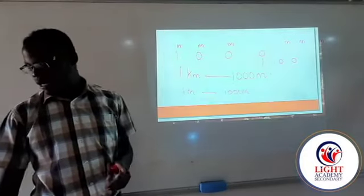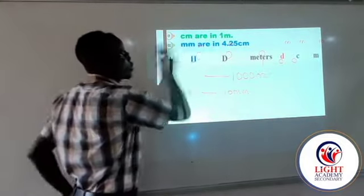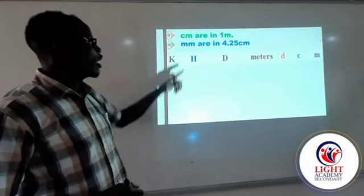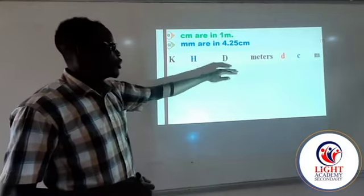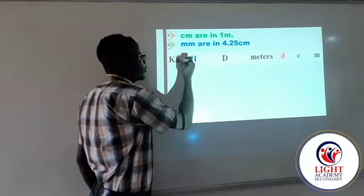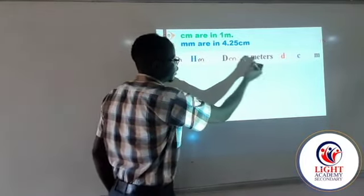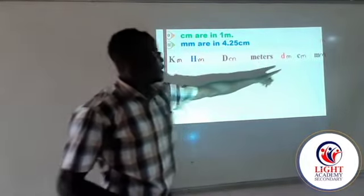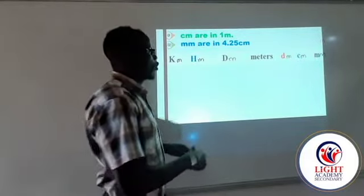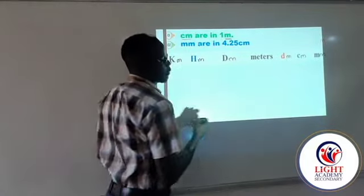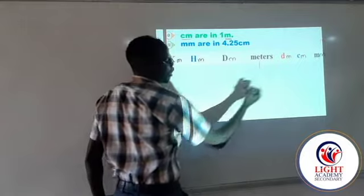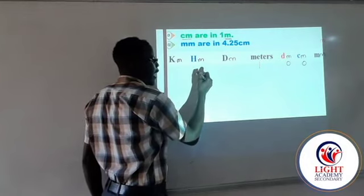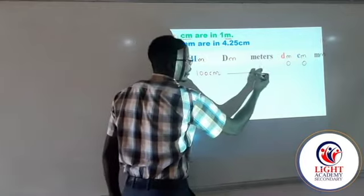We can try out an example here. We want to find out how many centimeters are in 1 meter. When you look at our metric clue sentence, you identify centimeters and meters. You write a 1 at meters, then 0, 0. This tells you that there are 100 centimeters in 1 meter.